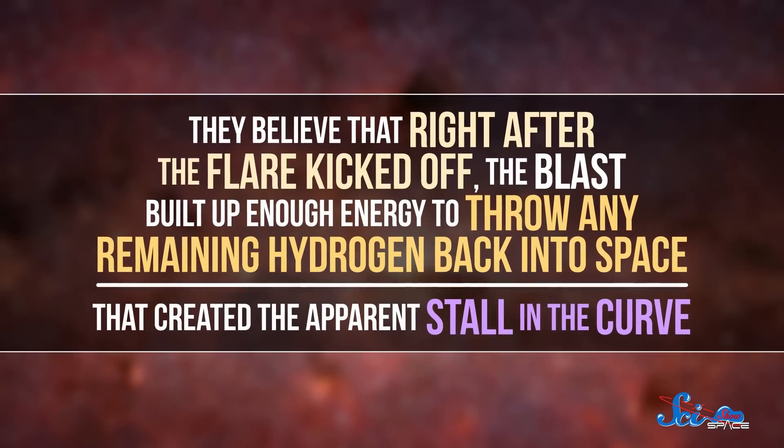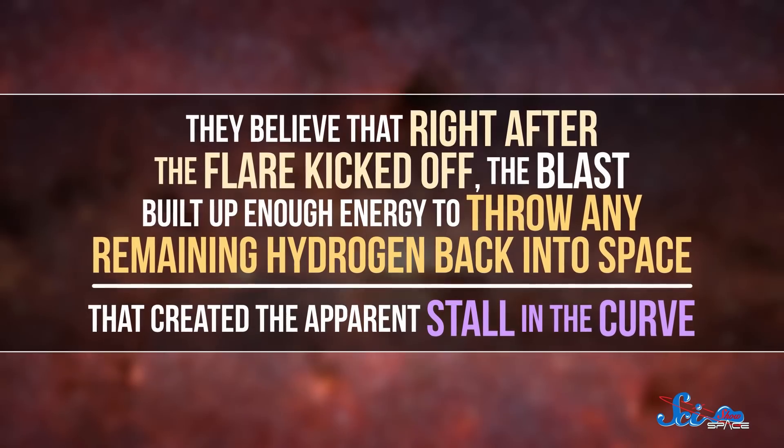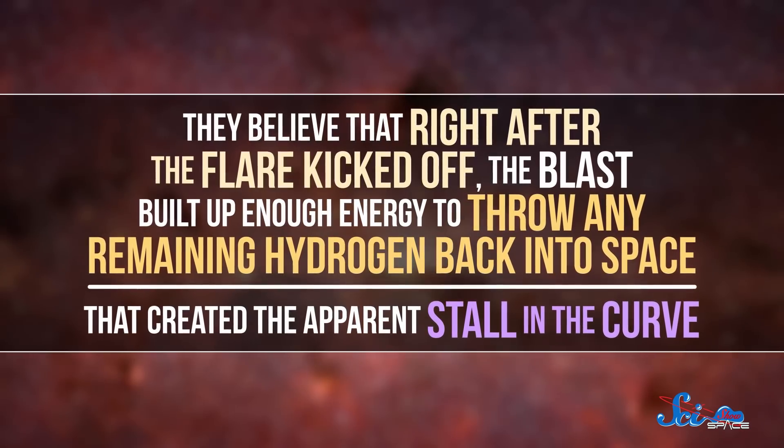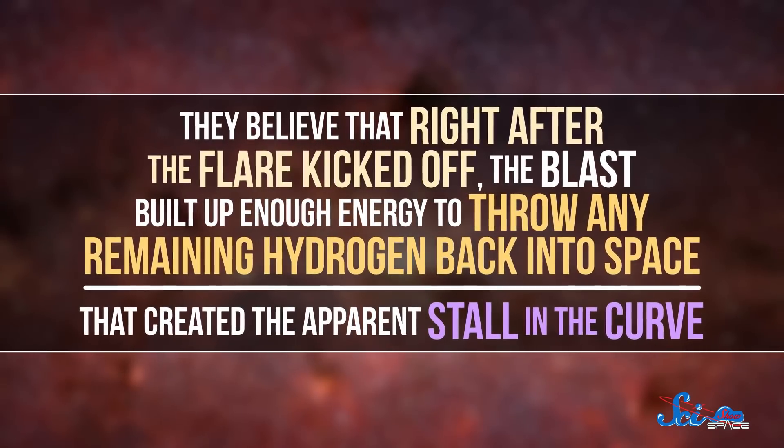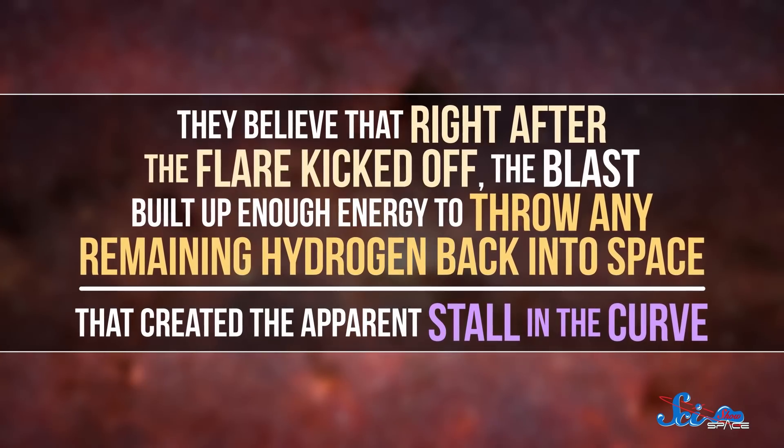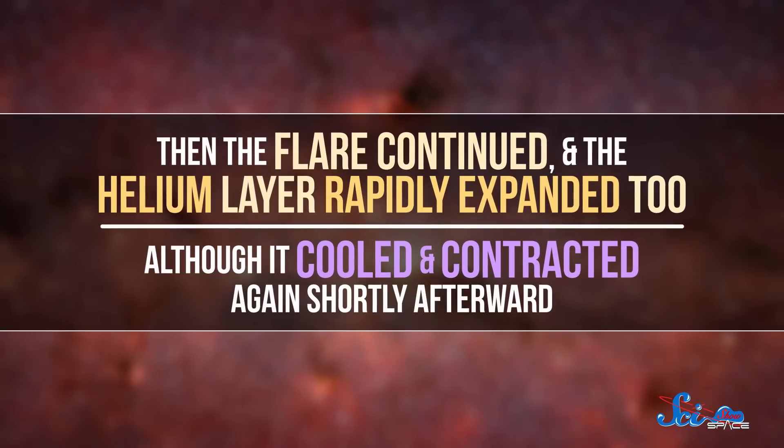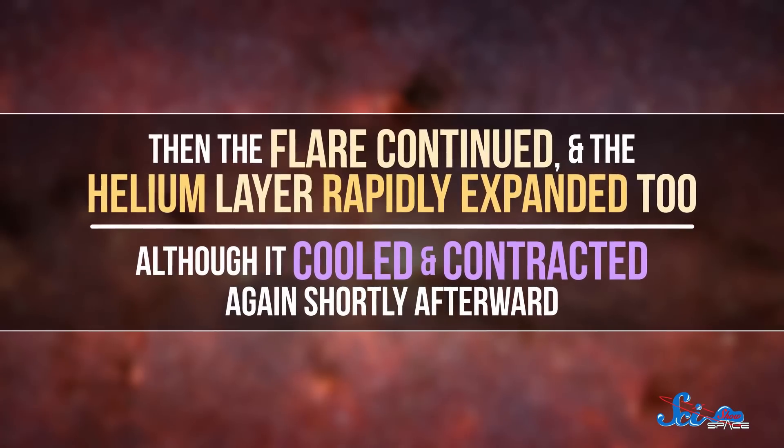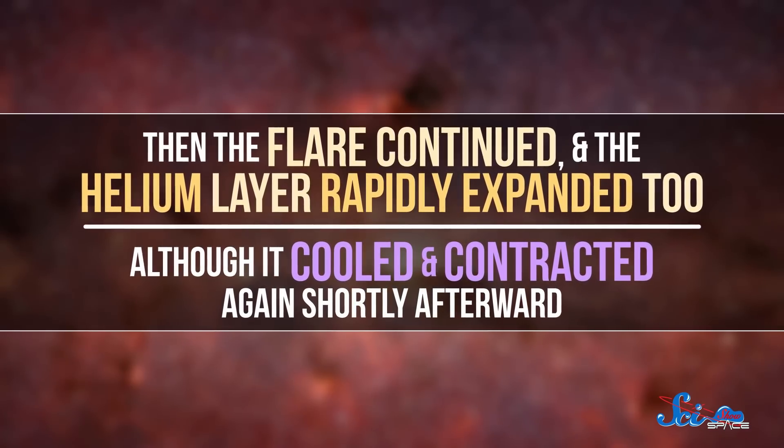Astronomers think that this happened because of specific events on the pulsar's surface. They believe that right after the flare kicked off, the blast built up enough energy to throw any remaining hydrogen back into space. That created the apparent stall in the curve. Then the flare continued, and the helium layer rapidly expanded too, although it cooled and contracted again shortly afterward. The whole burst was more or less over in about a minute.